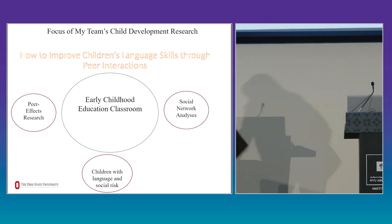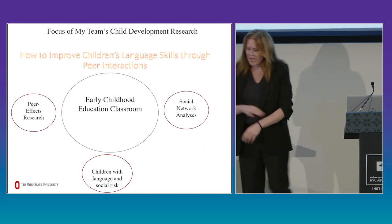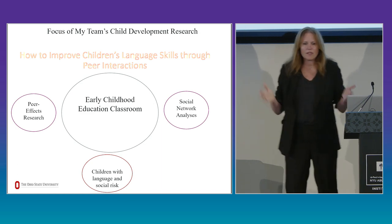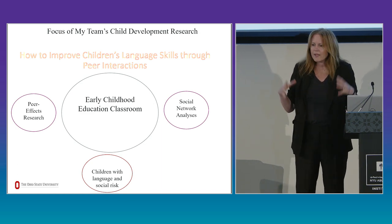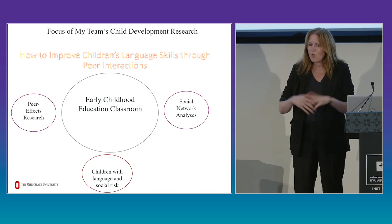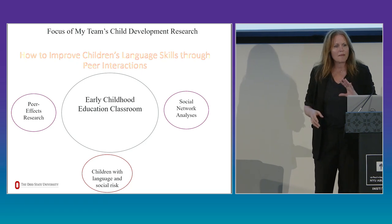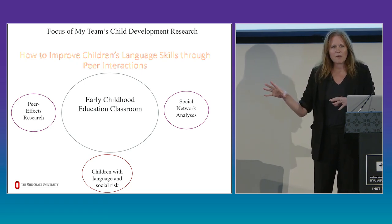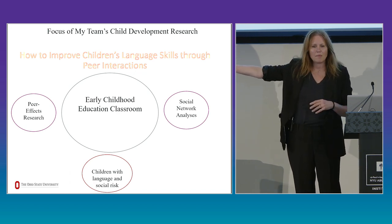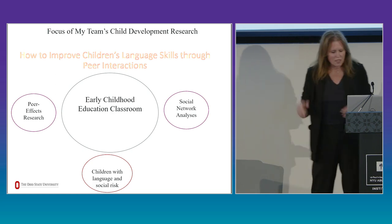I'm going to talk about our work in early education classroom settings. If you've ever been in an early childhood classroom, they're really complicated environments. You've got 20 or 25 little kids coming into school for the very first time — nothing has created homogeneity in them. I've been doing work in three areas: peer effects research, social network analysis, and children with language and social risks.